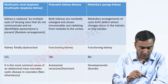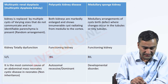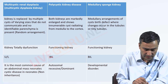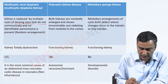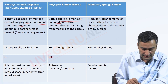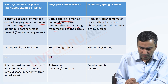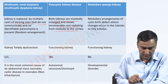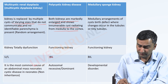In multicystic renal dysplasia, the cysts are varying in size and they do not communicate. In polycystic kidney disease, both kidneys are markedly enlarged, showing innumerable cysts radiating from the medulla to the cortex. In medullary sponge kidney, there is a specific arrangement of cysts.